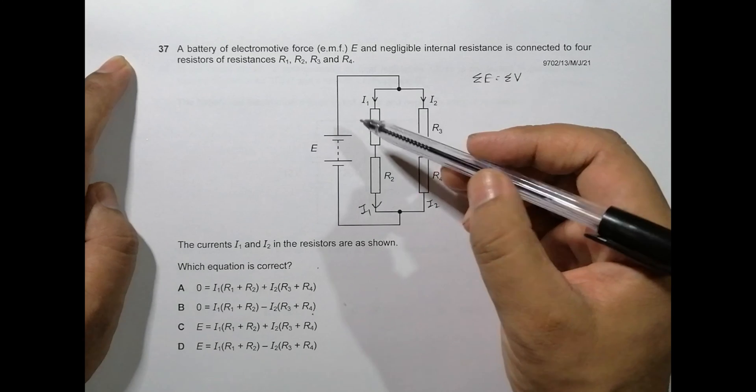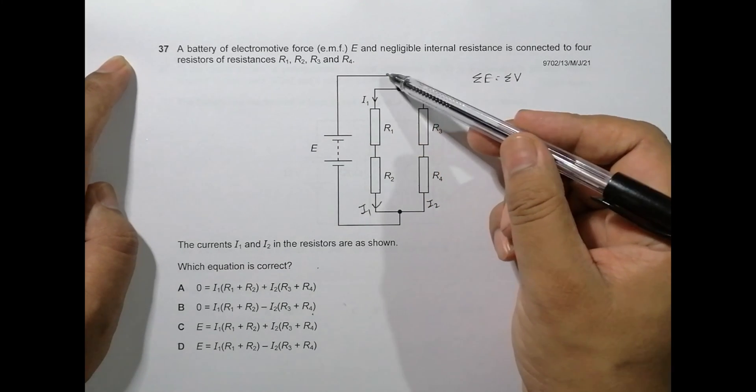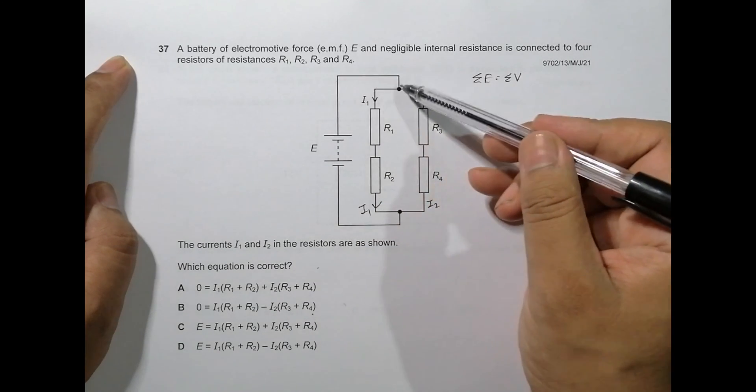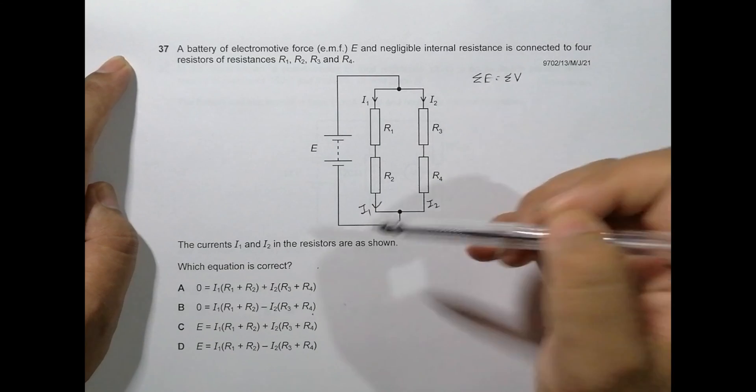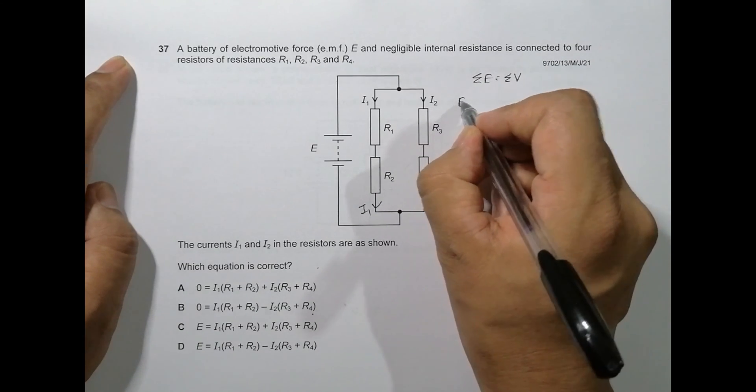One loop starts from here, it goes like this and like this and like this. So this is one closed circuit or loop. For this circuit or loop, the source of emf is E. E should be equal to the sum of potential differences.